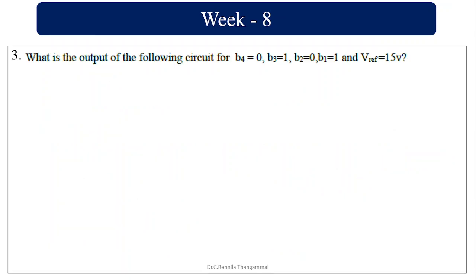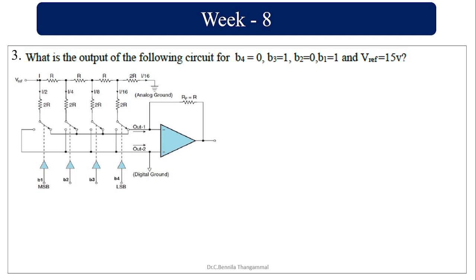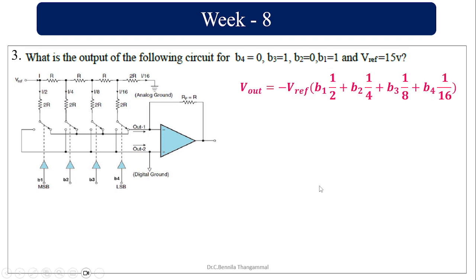What is the output of the following circuit? It is the same R-2R ladder circuit with a different input. Same formula applies. Here B4 and B2 are 0, V_reference is 15. So it is minus 15 times (B1 + B3) = minus 15 times (1/2 + 1/8). Taking LCM as 8, that is minus 15 times 5/8, giving minus 9.375.